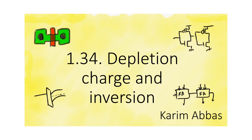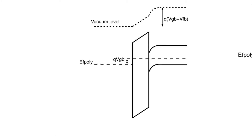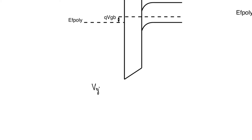In depletion mode, the MOS capacitor accumulates ionic charge, but if we keep applying a positive potential, at some point at the surface of the oxide, we start to attract electrons. The band diagram in depletion mode, and the basic equations we use are: Vgb equals V_oxide plus Vs minus V_flatband, and the continuity of charge gives epsilon_oxide times E_oxide equals epsilon_oxide times electric field in silicon, plus the accumulated charge at the surface of silicon.